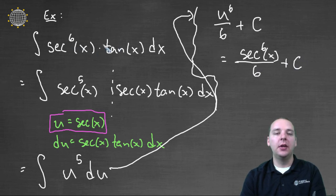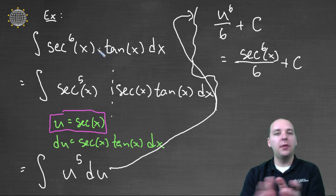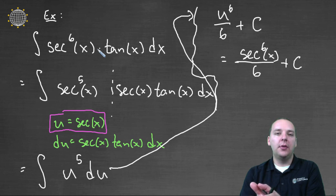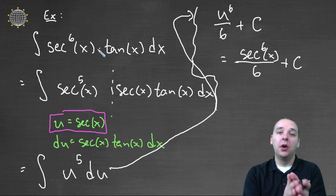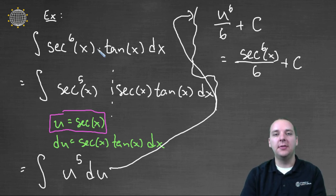So that's the general idea. Whenever you have sines and cosines or secants and tangents, you want to save part of it to be the du. And then you want to put the rest of the integrand in terms of the right term such that it's a function of u that matches the du that you saved at the end.